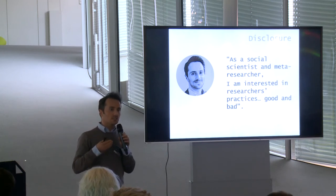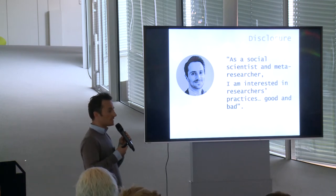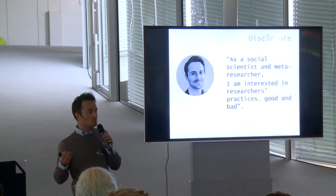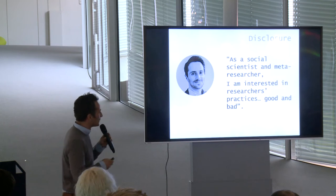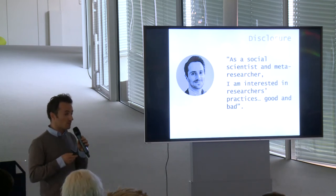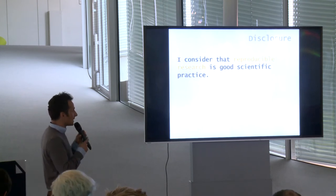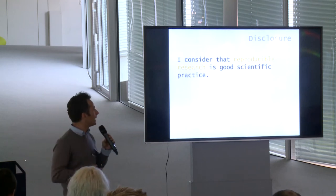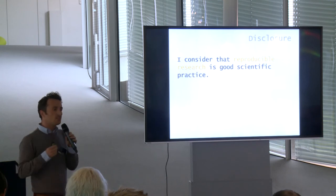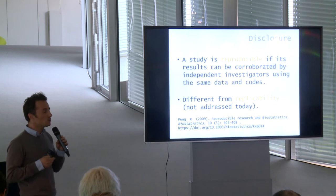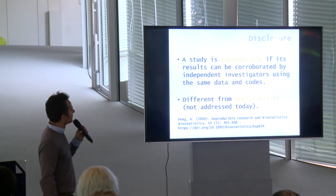As a social scientist, I'm particularly interested in a sub-area called meta-research, which is research on research, also known as the analysis of researchers' behaviors. I'm interested in why sometimes researchers behave and why sometimes they misbehave. When you say they behave or misbehave, you create an expectation about what is a good scientific behavior. In this presentation, I consider that producing research that is reproducible is a good scientific practice — that is what I consider good behavior.